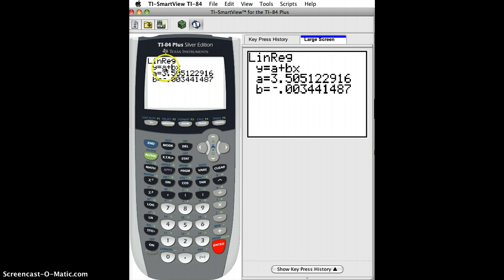And then hit enter again. And then it says okay, here's your linear regression. It's Y equals A plus BX, or Y hat as we said in class. A is the Y-intercept 3.505, and B is the slope minus 0.00344.